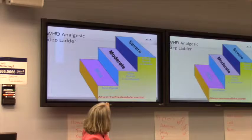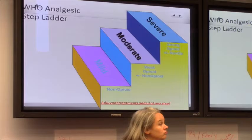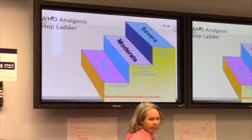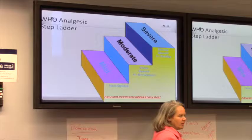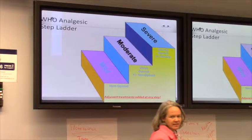For moderate pain, the weak opioids include tramacet, tramadol, codeine, and buprenorphine — which is in the weak opioid category. For severe pain, the strong opioids include hydromorphone, fentanyl, methadone, sufentanil, morphine, and oxycodone.